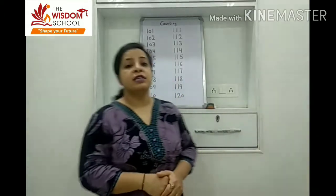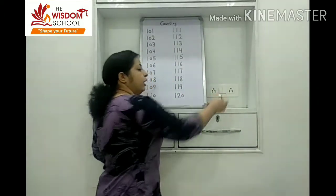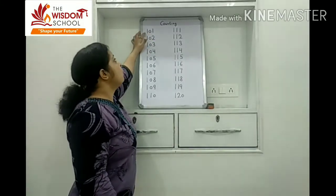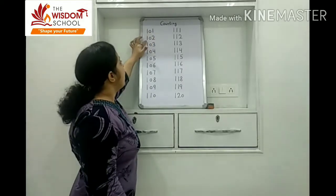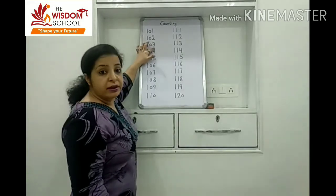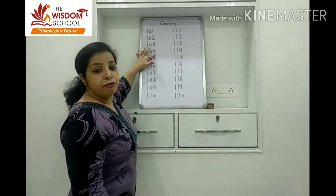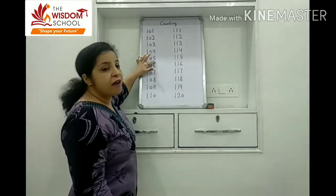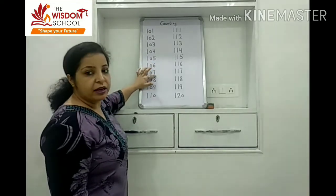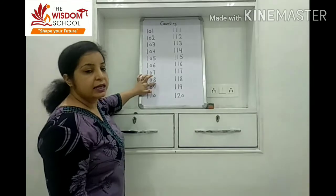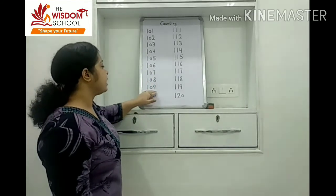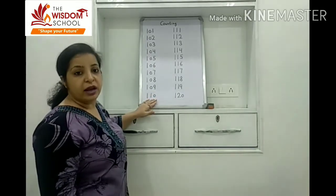And what comes after 1-0-0-100? Look here. 1-0-1-101, 102, 103, 104, 105, 106, 107, 108, 109. And what comes after 1-0-9? 1-1-0-110.